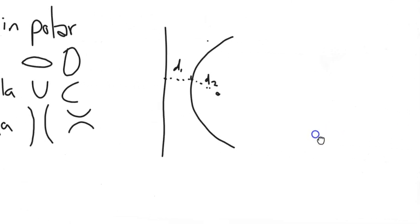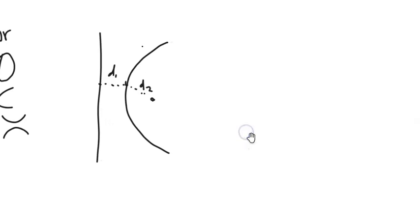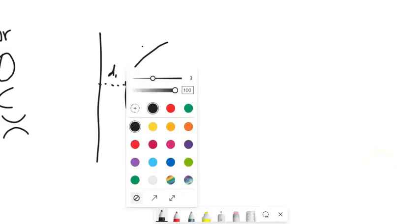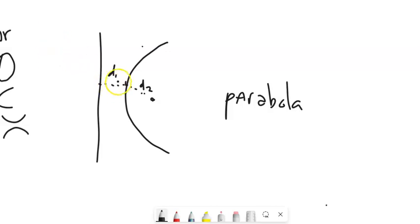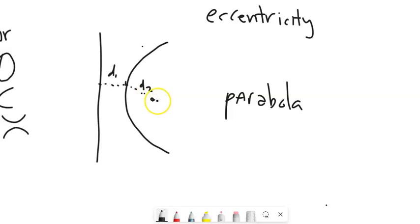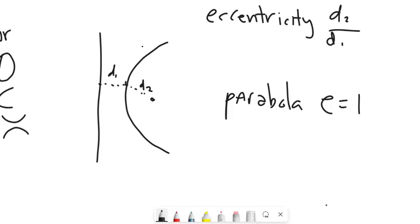We're going to take advantage of that definition. In the case of the parabola, distance one equals distance two. What we'll start to define is called the eccentricity of the shape. You can think of the eccentricity as distance two divided by distance one — in other words, the distance from the focus to a point on the shape, divided by the distance from that same point to the directrix. So eccentricity is D2 divided by D1. In the case of the parabola, the eccentricity is equal to one. You've seen all these shapes before.